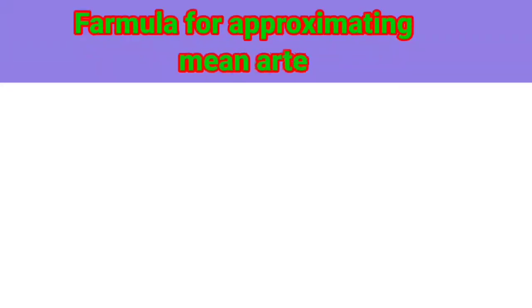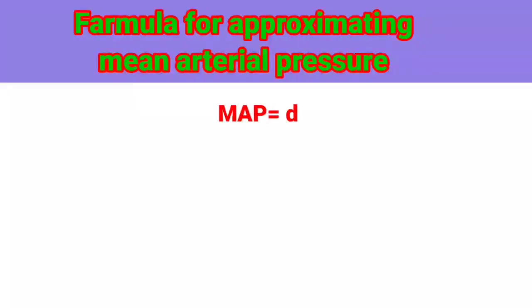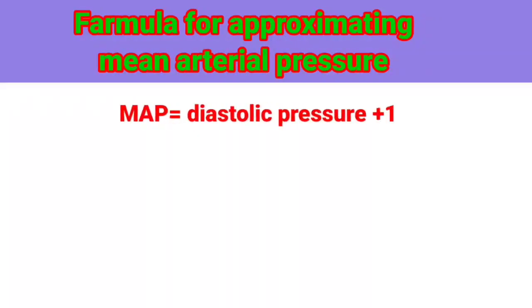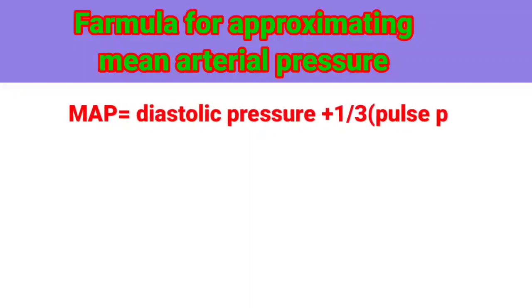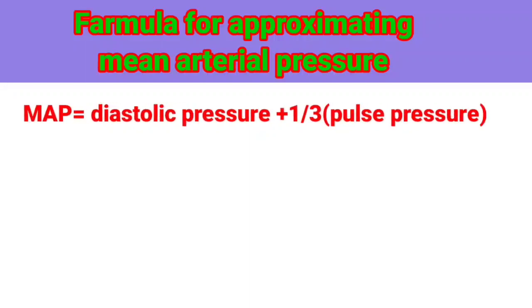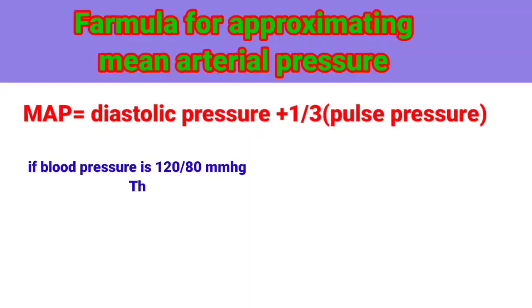The formula for approximating Mean Arterial Pressure: MAP is equal to diastolic pressure plus one-third of pulse pressure. For example, if blood pressure is 120 by 80 mmHg,